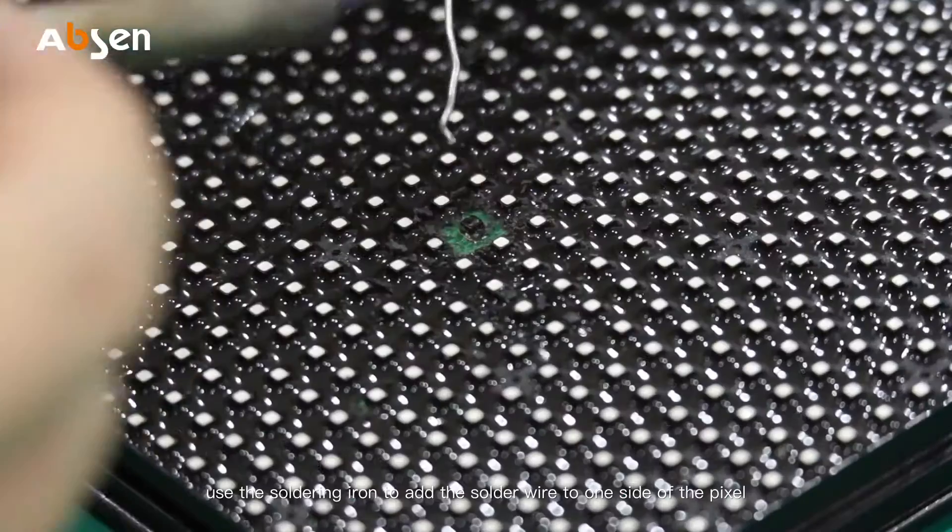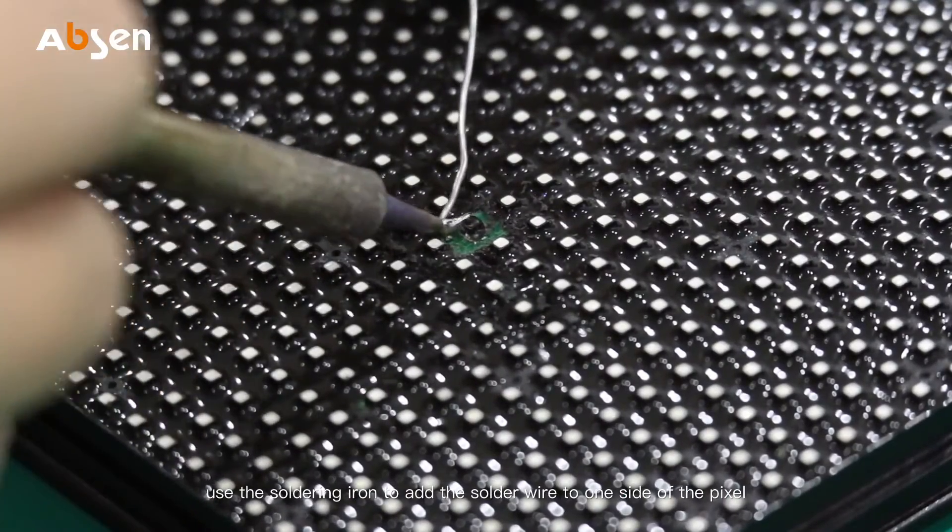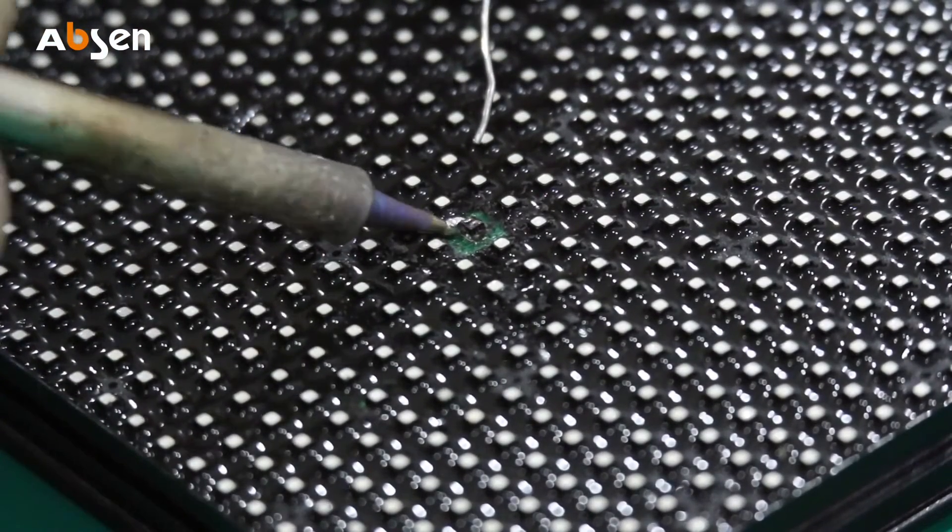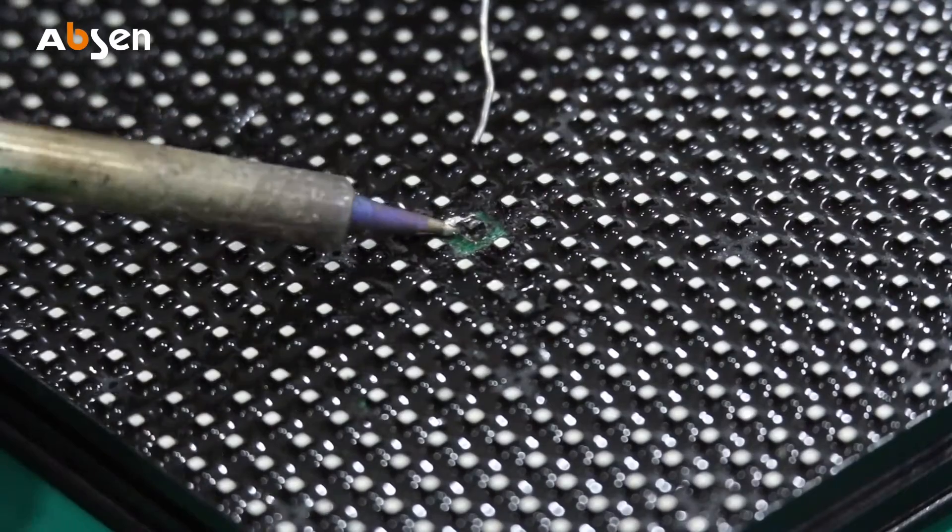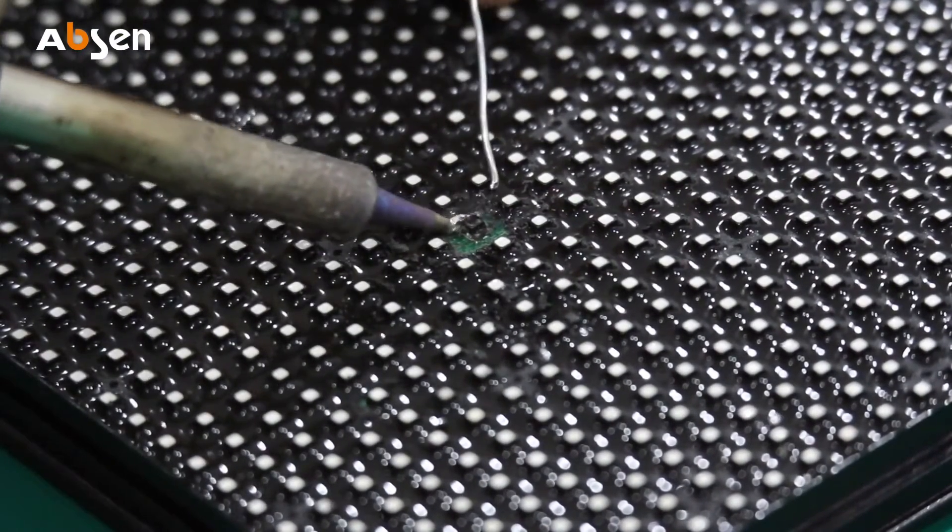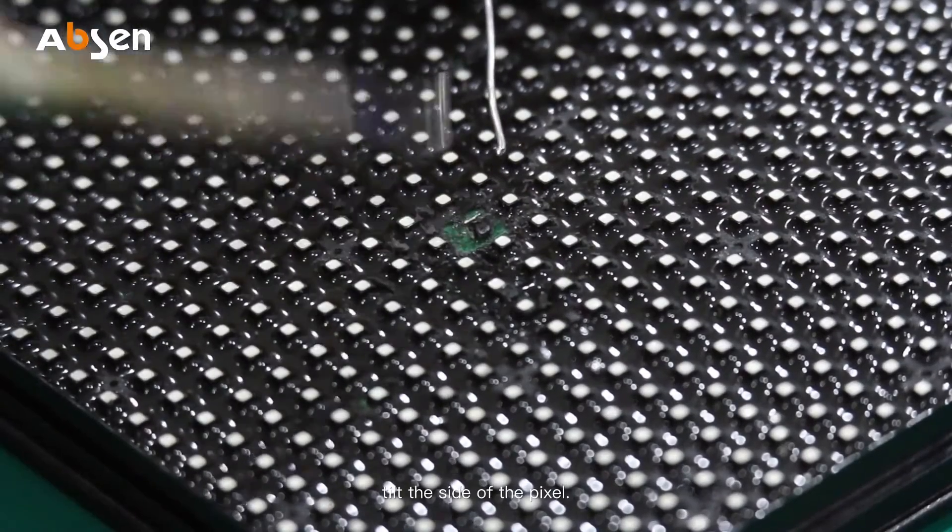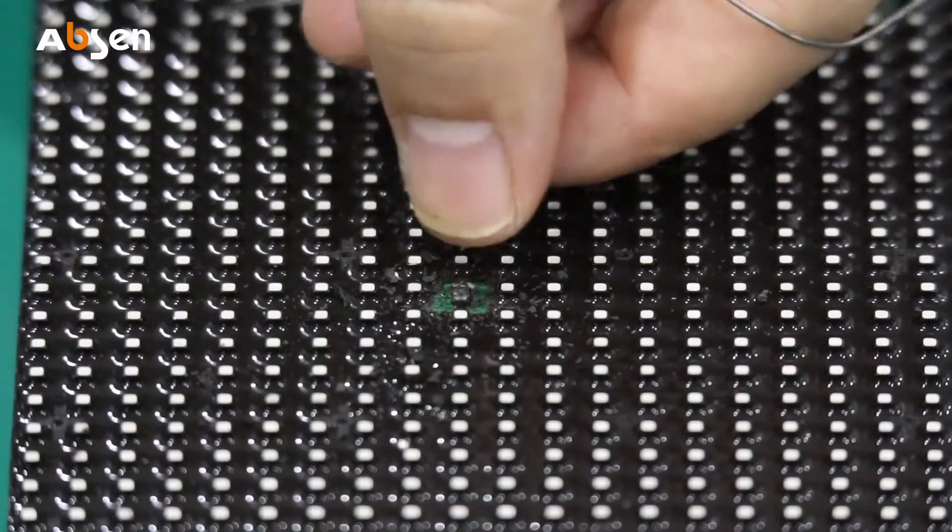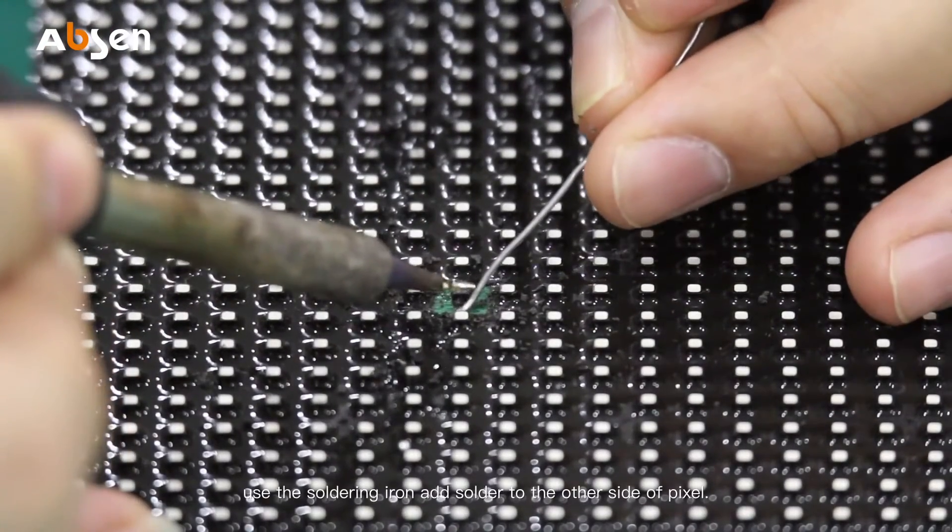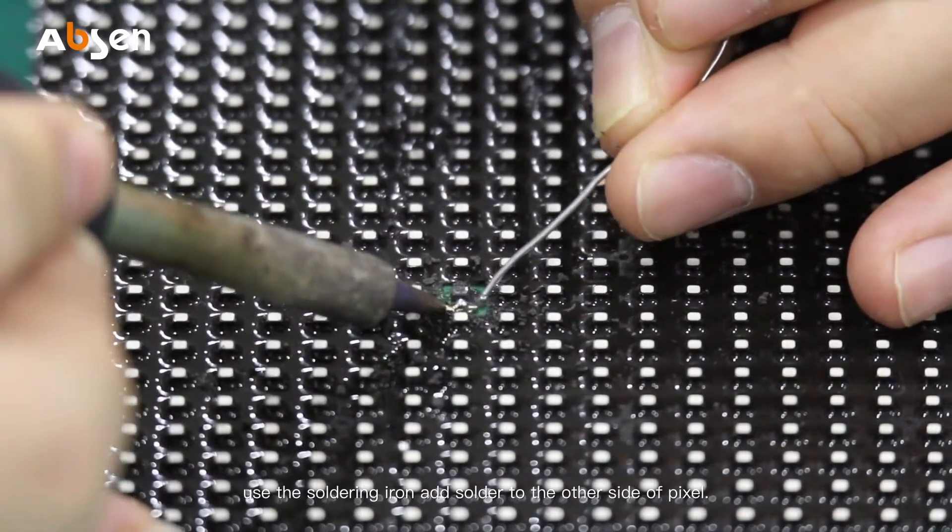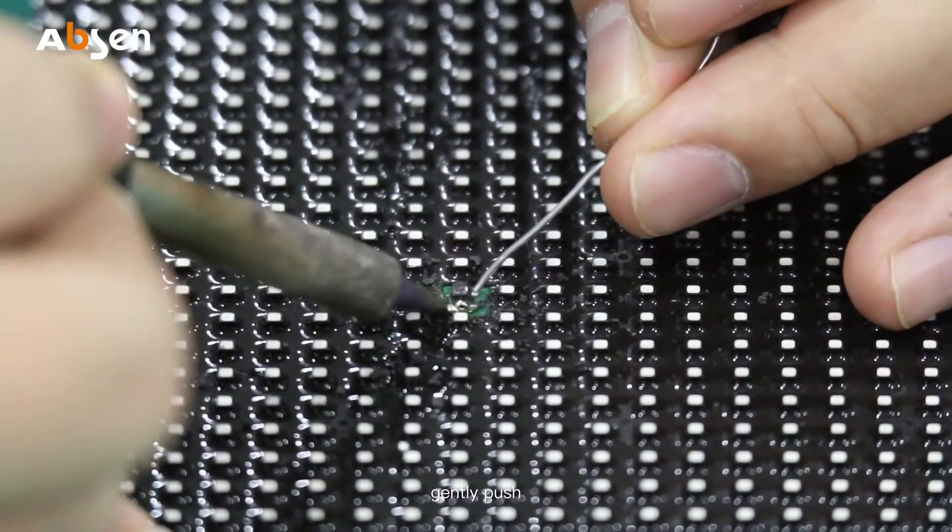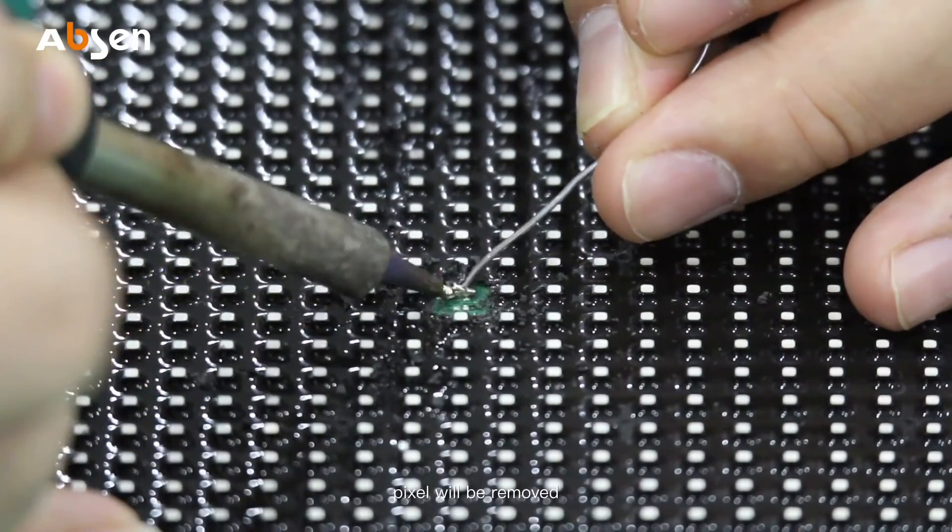Use the soldering iron to add the solder wire to one side of the pixel. Push slightly and tilt to the side of the pixel. Hold the top of the pixel by hand and use the soldering iron to add solder to the other side. Gently push and the pixel will be removed.